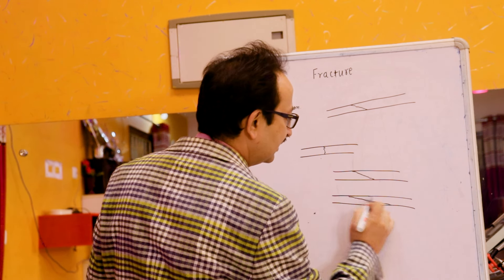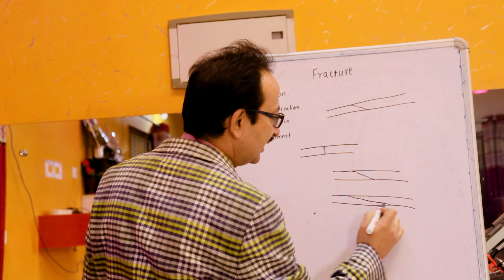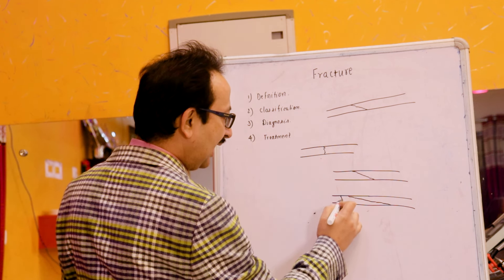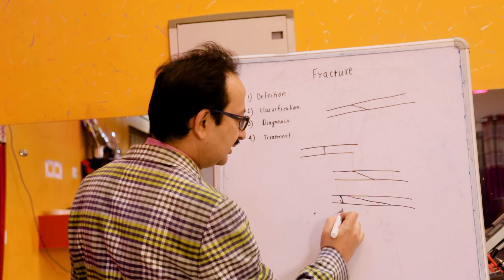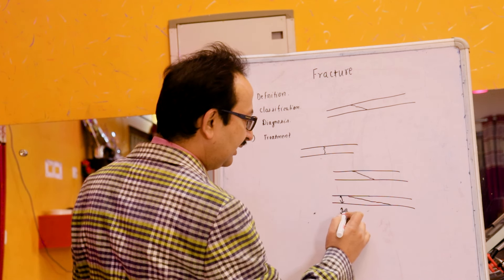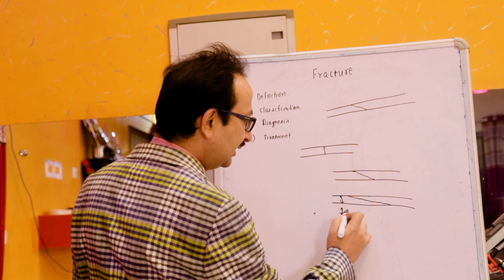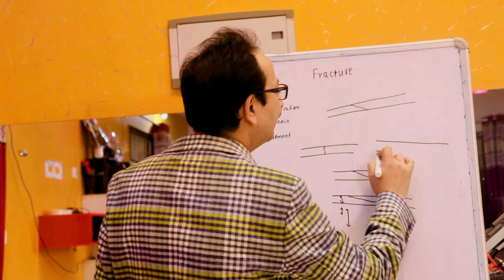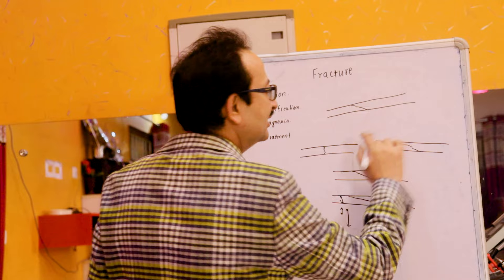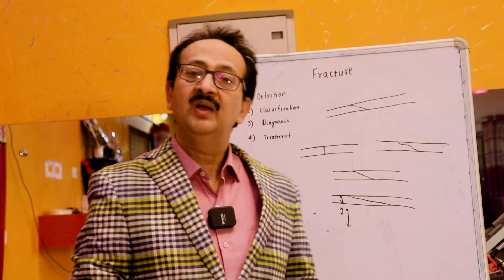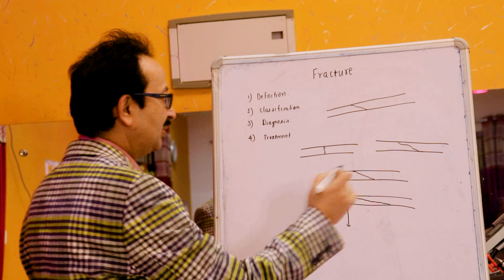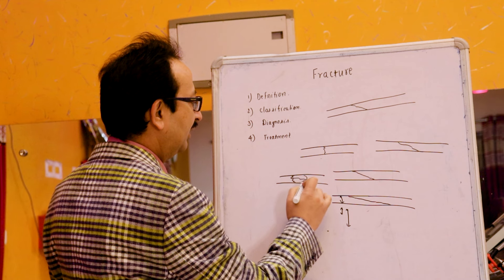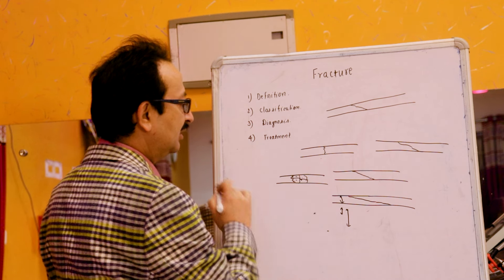In a long oblique fracture, the length of the fracture line is more than double the diameter of the bone at that level. The fracture can also be a spiral fracture, in which the fracture line is in more than two planes. Another fracture based upon pattern is the so-called comminuted fracture, in which the fracture is in different parts — more than two or three fragments are there.